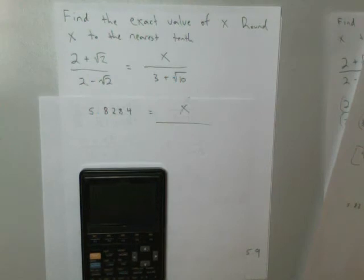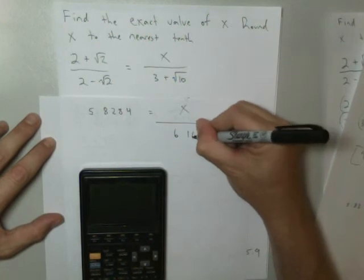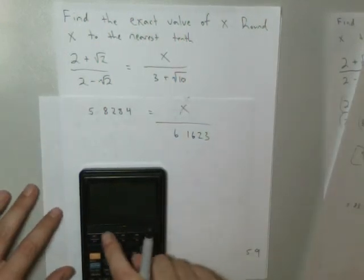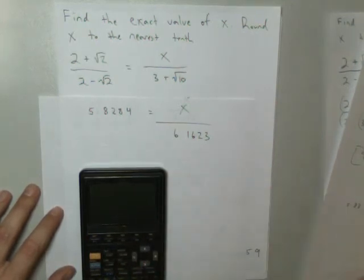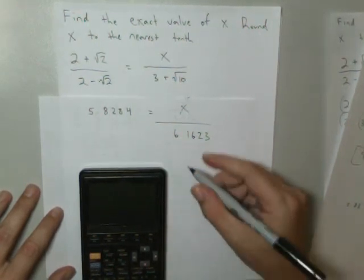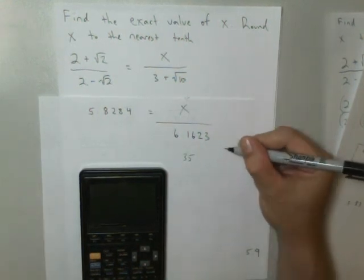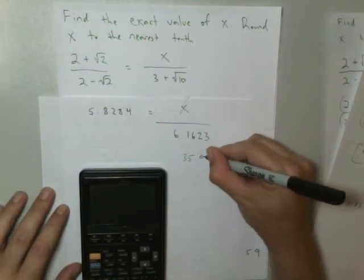This is x over, and I'll do 3 plus the square root of 10, and that's 6.1623. Now I'll go ahead and leave that in the calculator, which I've set to round to 10 places, just because it saves me a step. Times 5.8284, and it'll give me 35.9162, and so on, which is still 35.9.